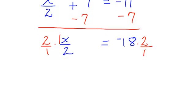On the left side, the 2's will cancel out. I will have x equals, on the right side, negative 18 times 2 is a negative 36. So make sure that you follow your rules, because you do not want to make a careless mistake.